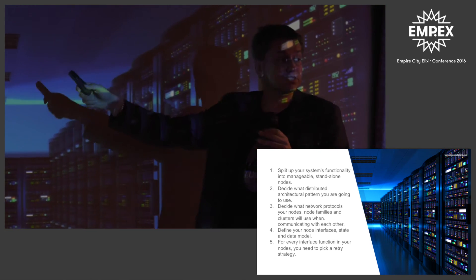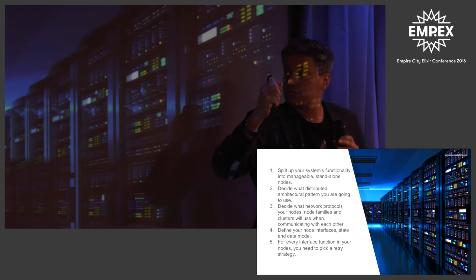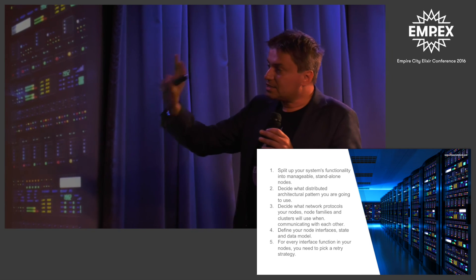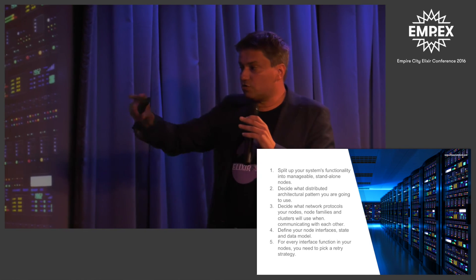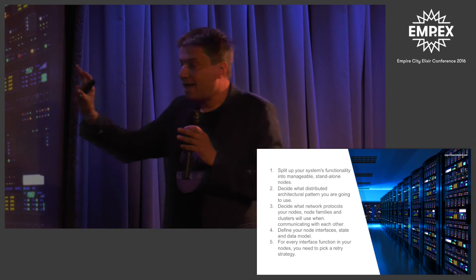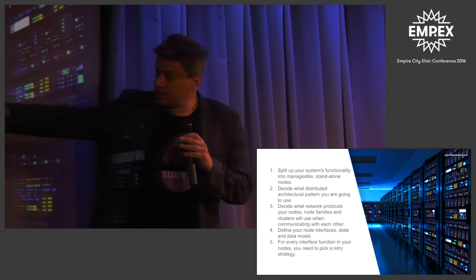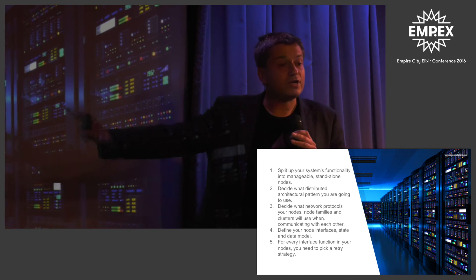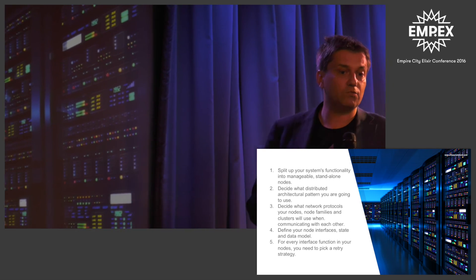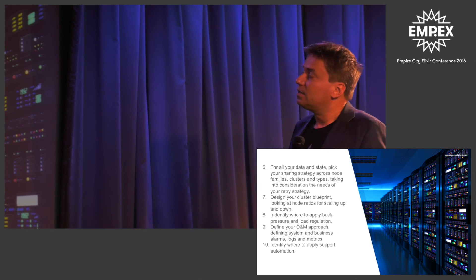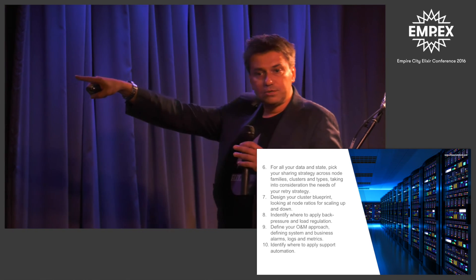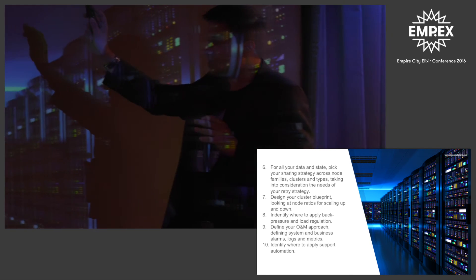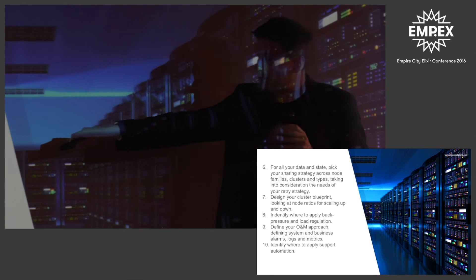You split up the system functionality into manageable standalone nodes. Once you've done that, decide the distributed architectural pattern, decide what network protocols your nodes, node families, and clusters will use, then define the interfaces and the data model in these nodes. From there, look at your retry strategy — at most once, exactly once, at least once. The next step is your data sharing strategy across your distributed pattern and capacity planning.